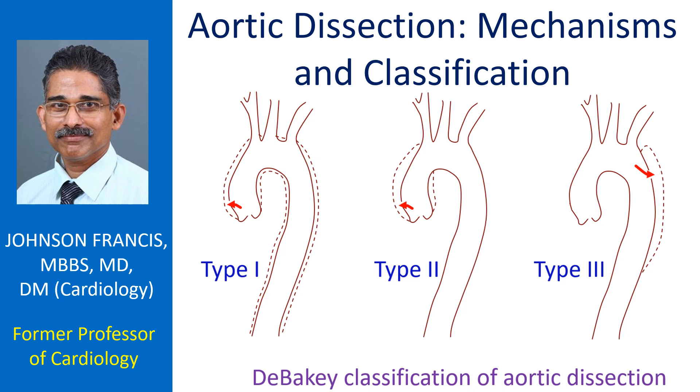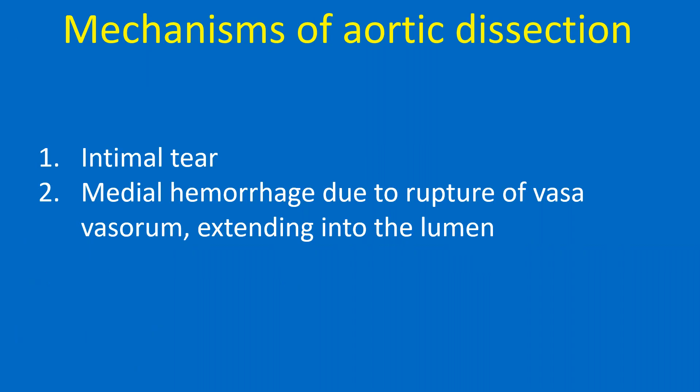Aortic dissection: mechanisms and classification. The two main mechanisms of aortic dissection are: 1. Intimal tear, and 2. Medial hemorrhage due to rupture of vasa vasorum extending into the lumen.